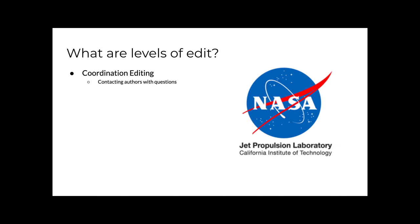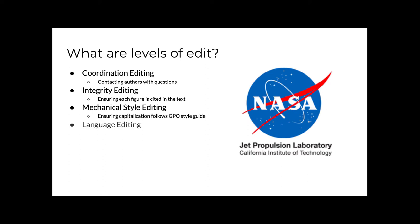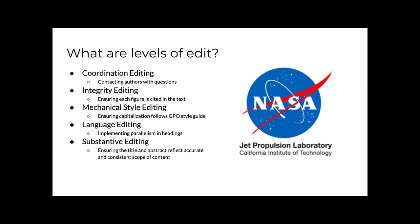Coordination editing involves contacting authors when there were questions. Integrity editing includes ensuring that every figure in the original material was cited at least once within the text of the publication. A mechanical style edit would make sure capitalization followed the most recent version of the style guide produced by GPO, or the Government Printing Office. Language editing included things like implementing parallelism and headings. Substantive editing would ensure that the title and abstract accurately and consistently reflect the scope of content that actually appears in the publication.